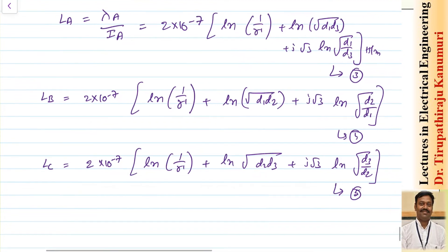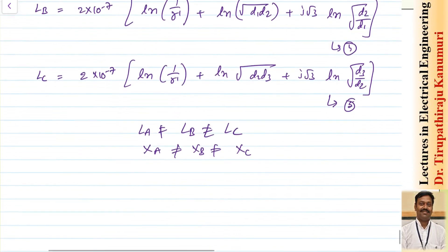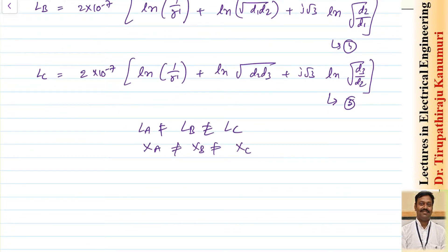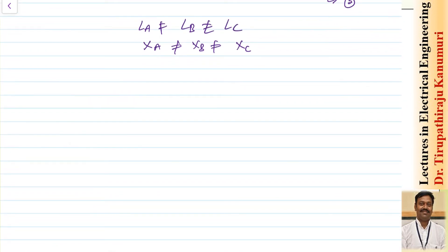From these three equations we can observe that the inductances are not equal because the distances are different. If distances were equal, all terms would be equal. Since they are not, La ≠ Lb ≠ Lc, meaning inductive reactances differ, leading to different voltage drops in each conductor. To avoid this problem, the solution is transposition — each conductor occupies every position so that unbalance is compensated.